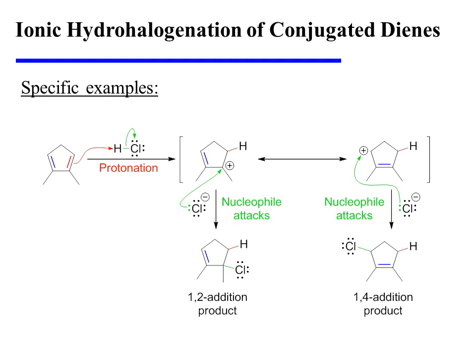On the other hand, it is the 1,4 addition product that contains the more highly substituted double bond. This is consequently the more stable alkene product, and it is formed at higher temperatures. In this case, the 1,4 addition product can also be called the thermodynamic product.